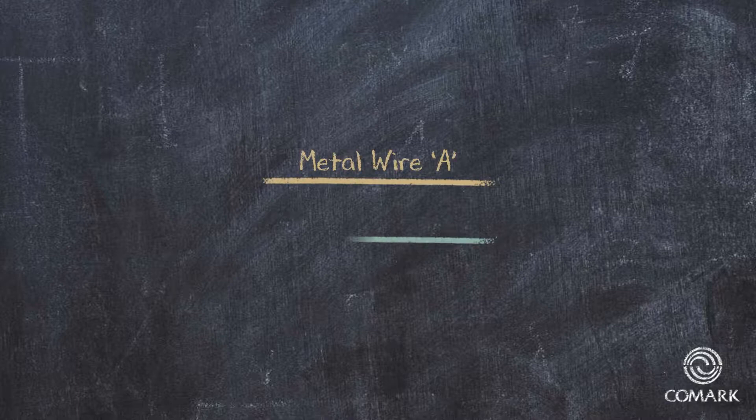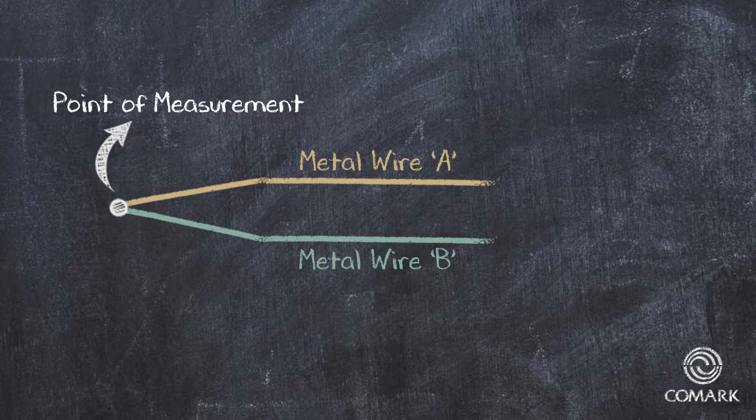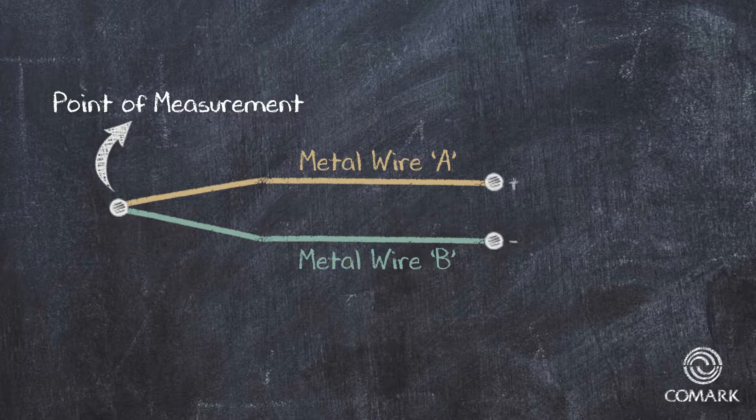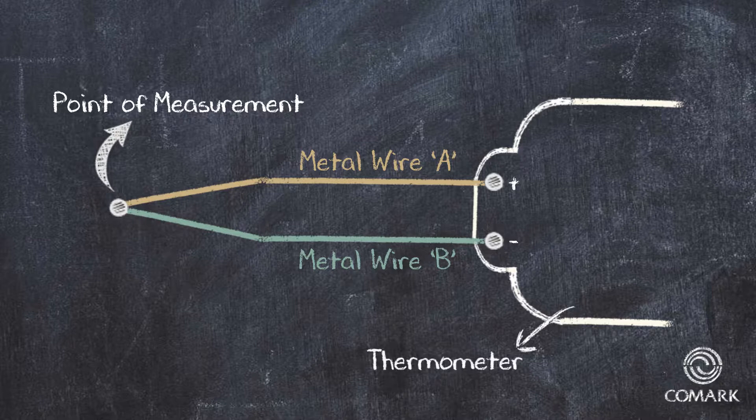The thermocouple itself is made by welding two dissimilar metal wires together, which form the point of measurement. The wires are then insulated from each other along their lengths and terminated with a connector for connection to a meter, or in our case, a handheld thermometer.